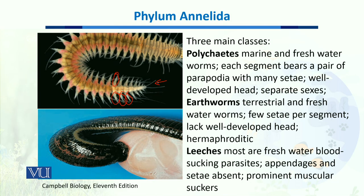Earthworms do not have separate sexes — they are hermaphrodites, meaning the same organism can produce both male and female gametes, which through sexual reproduction can unite to give rise to a new organism.